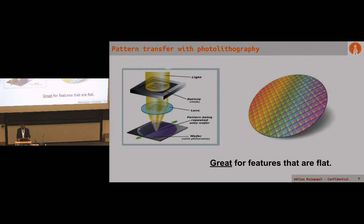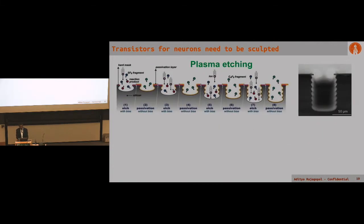We turned to nanofabrication facilities. We happened to have access to a very nice clean room at Caltech. We could sculpt silicon and mold it to generate a transistor that was the size of the cell itself. We took pattern transfer methods that really have driven the semiconductor industry forward.